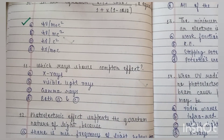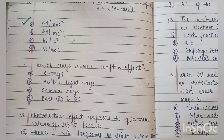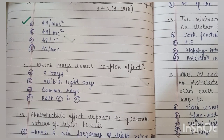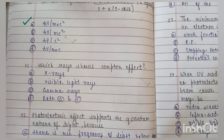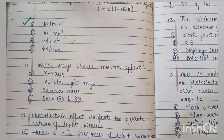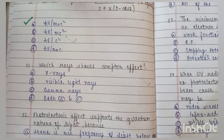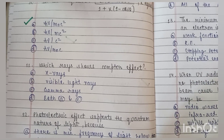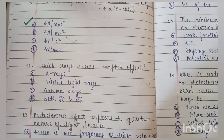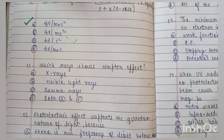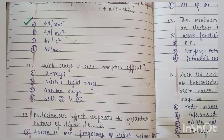Question number 11: which ray shows the Compton effect? X-rays, visible light rays, gamma rays, or both A and C? The correct answer is D: both X-rays and gamma rays.